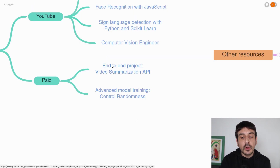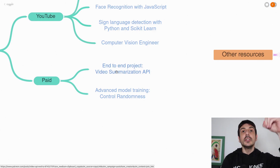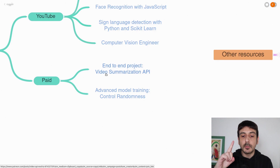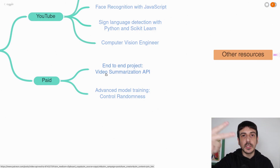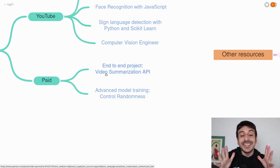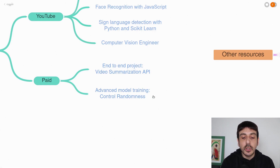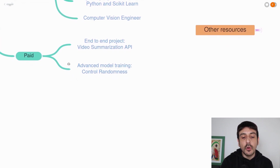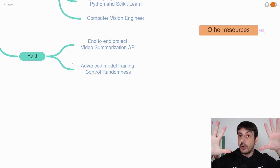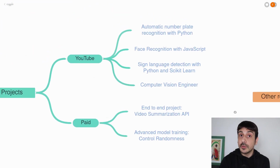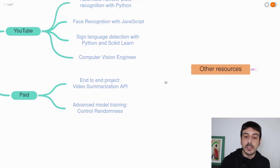These are a few examples from my own paid products. For example, this is a project available in my Patreon where I show you the entire process of how to build a video summarization API — from the requirements up to the project deliverable, covering every single step: how to do the planning, the system design, the execution. This is exactly how a real-world computer vision project looks like. Then there's another example also available in my Patreon: a very advanced lesson on how to train a machine learning model, involving how to control the randomness when training. These are a few resources you could take to enhance your skill sets.